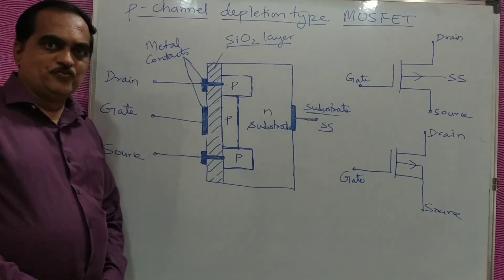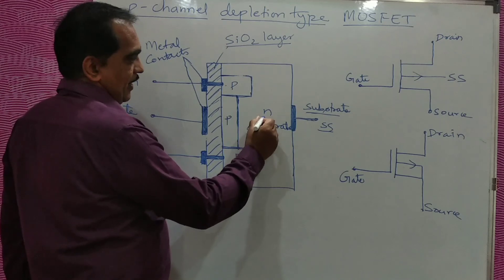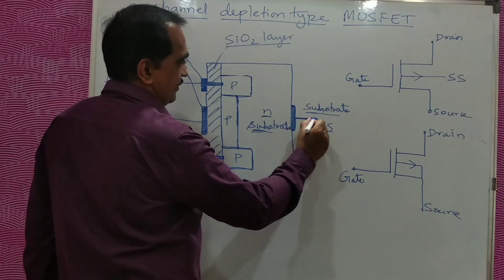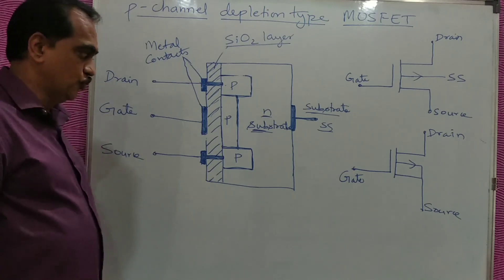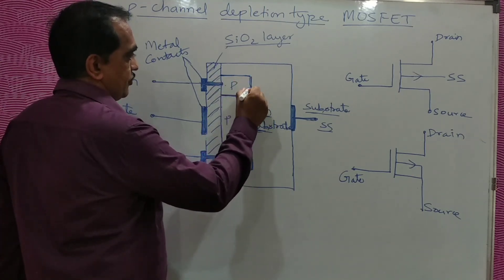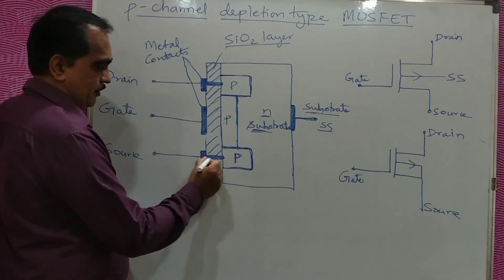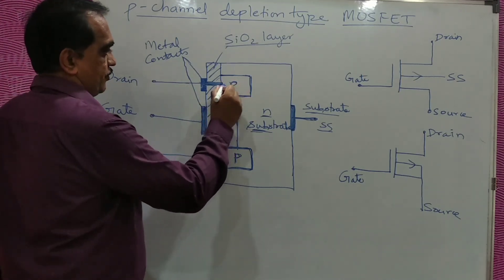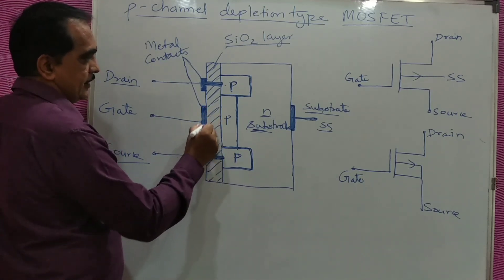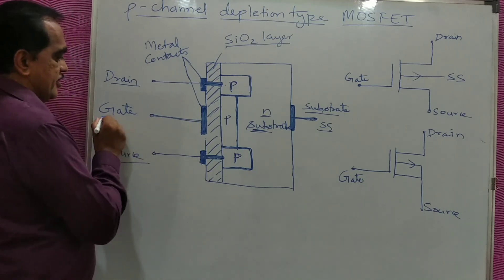Now on the same lines, we will see what is the P-channel depletion type MOSFET. Here you can see an N-type substrate. In this N-type substrate you are having a metal contact and the terminal as substrate, which can be internally connected to the source. Then you have a P-type semiconductor here, and here also P-type semiconductor, and in between also P-type semiconductor is existing. This P-type semiconductor is connected with a metal contact to the source, and this P-type semiconductor is connected with a metal contact to the drain. Metal is here, and in between you have an oxide layer, and then the semiconductor — that is your gate, the insulated gate.